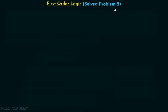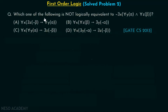Let's discuss and solve problem two on first-order logic. Which one of the following is NOT logically equivalent to: not of there exists x, for all y alpha and for all z beta? We have to find out which option is not logically equivalent to this expression. These are the options available in front of you, and this question has been asked in GATE CS 2013. I would encourage you to pause the video for a while and try to answer this question on your own.